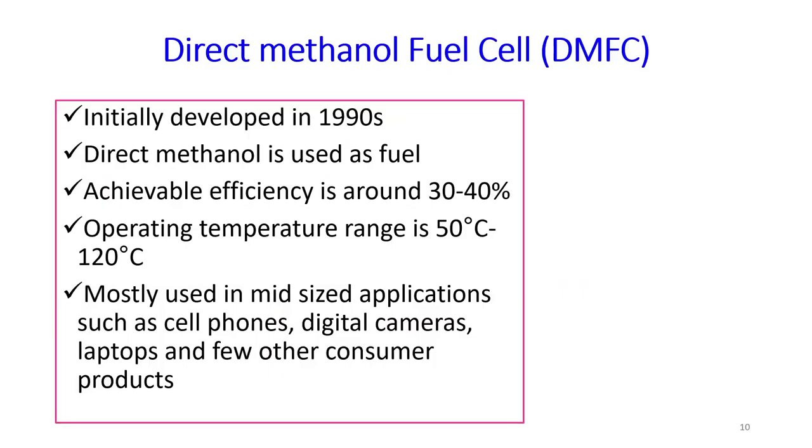Let us move to the direct methanol fuel cell. We can reform methanol or use it directly for fuel cell applications. This was developed in the 1990s. Achievable efficiency is about 30 to 40 percent, and its operating temperature range is 50 to 120 degrees Celsius. These fuel cells are mostly used in mid-size applications such as cell phones, digital cameras, laptops, and other consumer products.